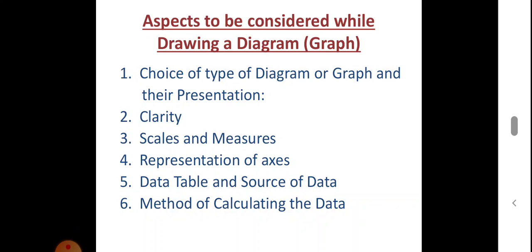Now we discuss about aspects to be considered while drawing a graph or diagram. Before we start this topic, we have to know the meaning of diagram and graph. Diagram and graph have similar meaning — they refer to the representation of observable data by way of pictures.